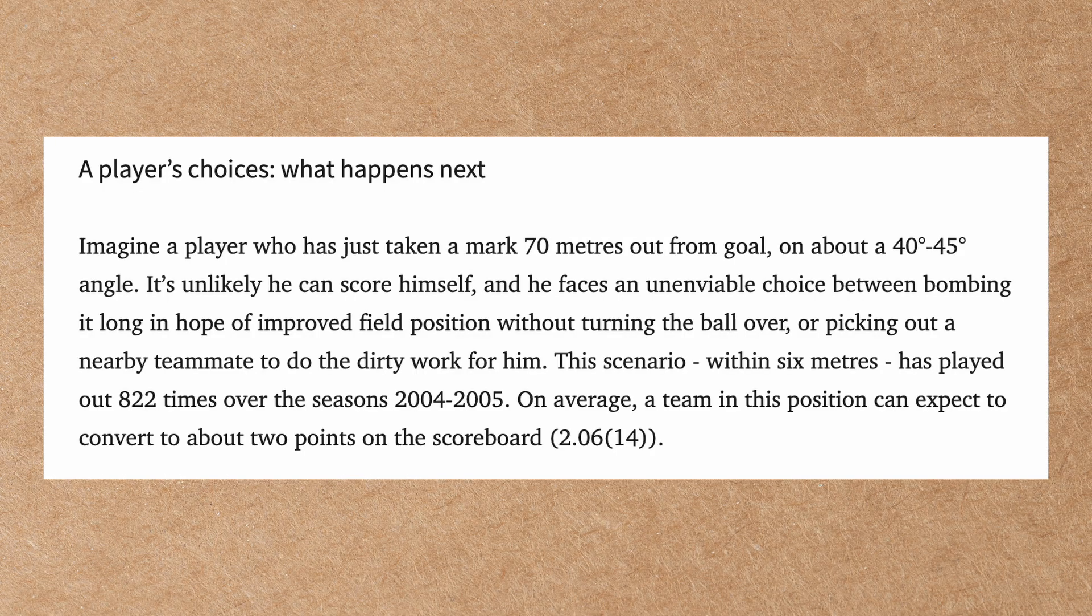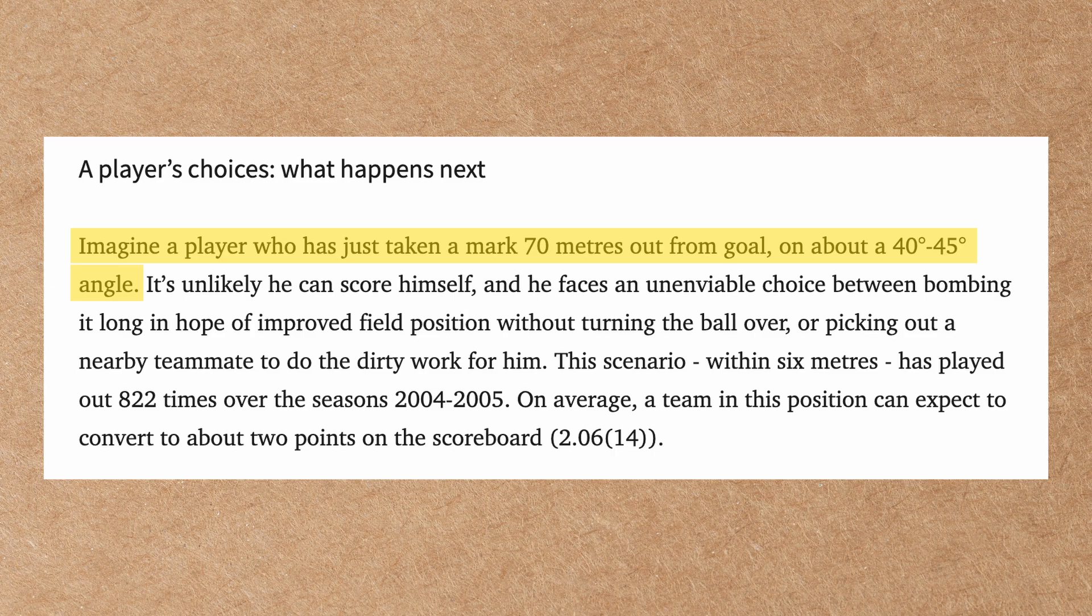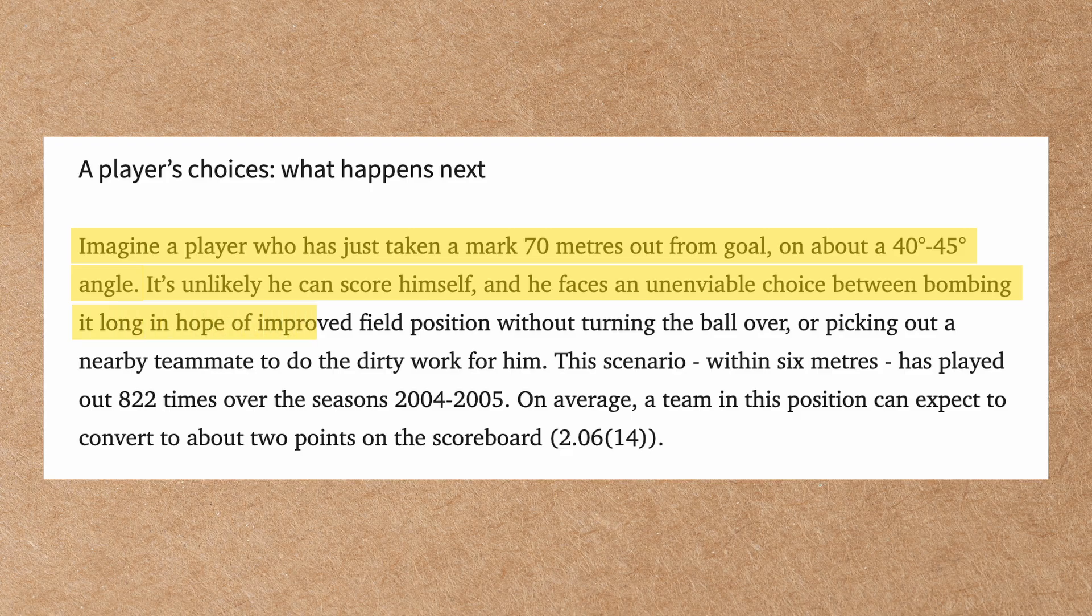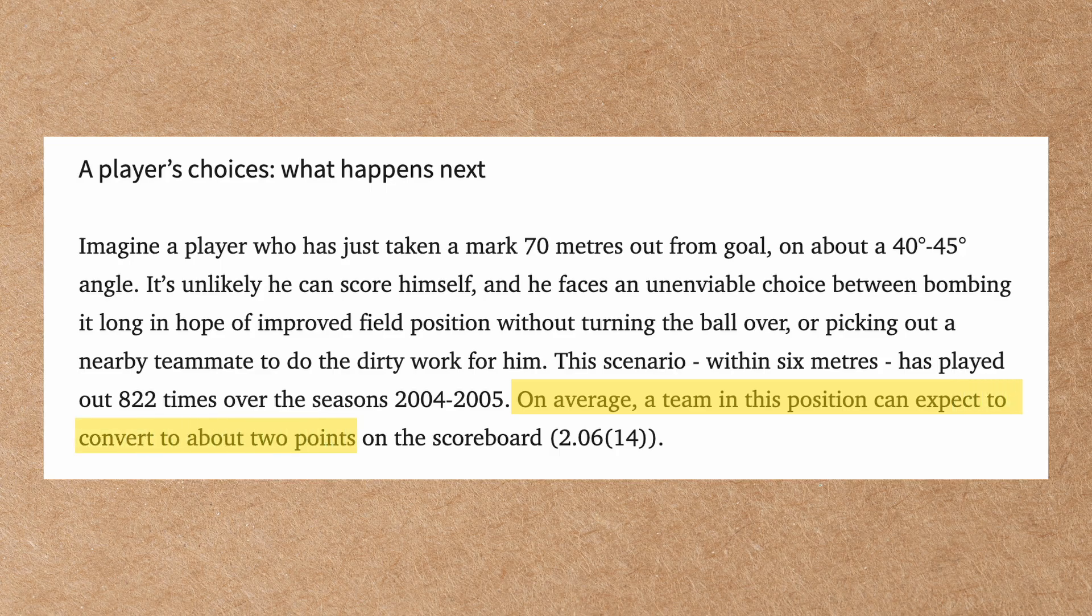In his results section, O'Shaughnessy presents a scenario. Imagine a player who has taken a mark 70 meters out from goal on a 45-degree angle. It is unlikely he can score himself, so he faces the unenviable task of bombing it long in hopes of improved field position without turning the ball over. The data used is old now, but back then he suggested that, on average, a team in this position can expect to convert about two points. Which was perhaps an early foray into expected score in the AFL.